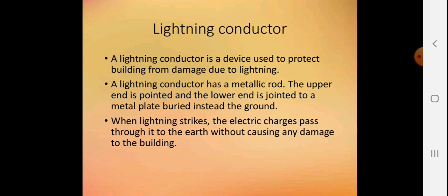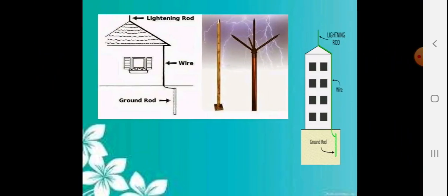A lightning conductor is a device used to protect tall buildings from damage by lightning. A lightning conductor has a metallic rod. The upper end is pointed and the lower end is joined to a metal plate buried deep in the ground. When lightning strikes, the electric charge passes through it to the earth without causing any damage to the building.